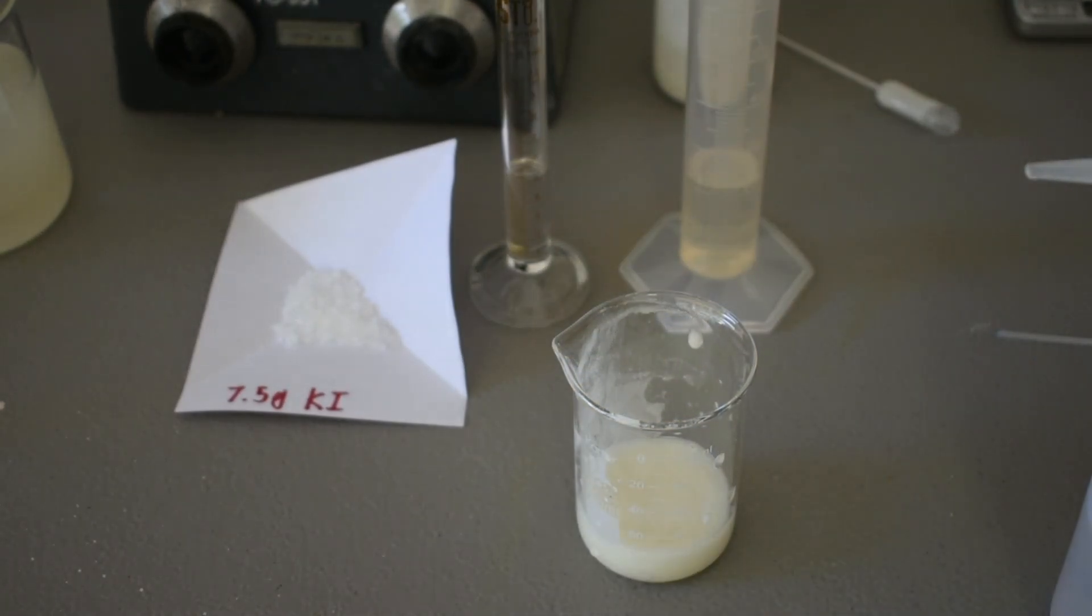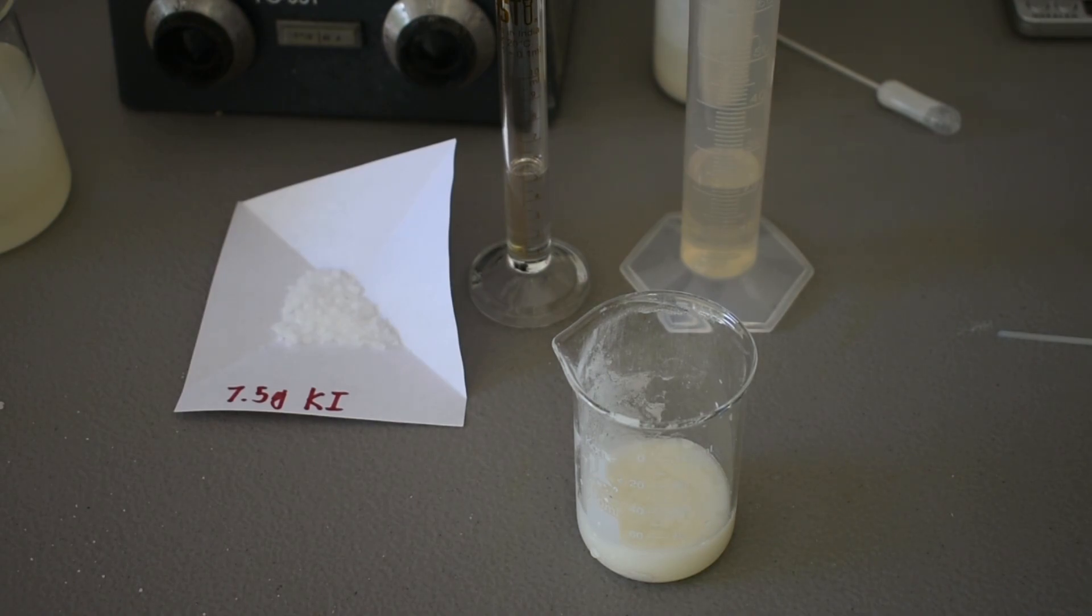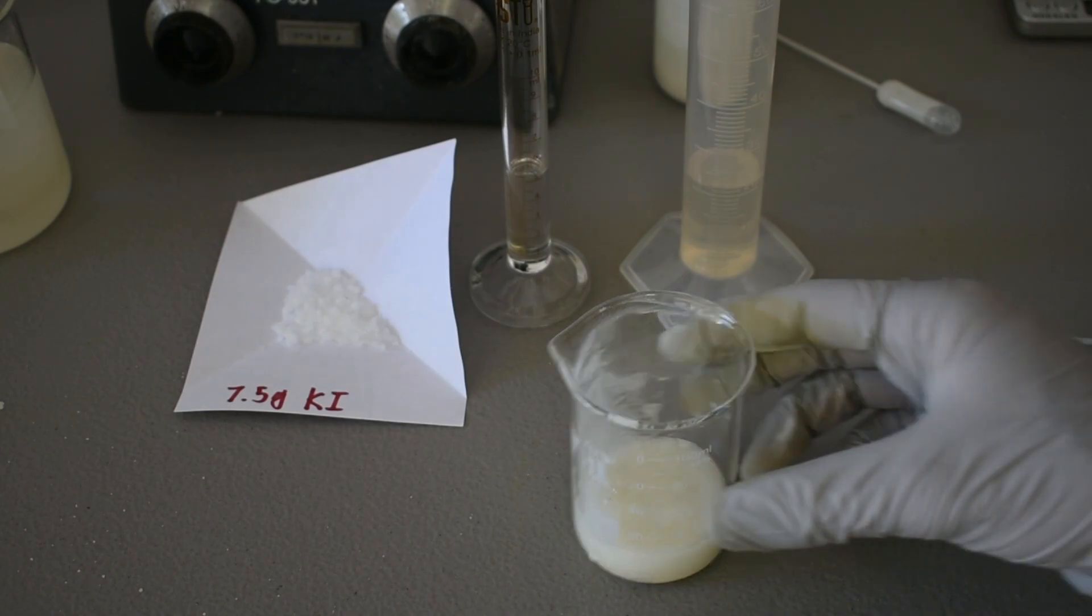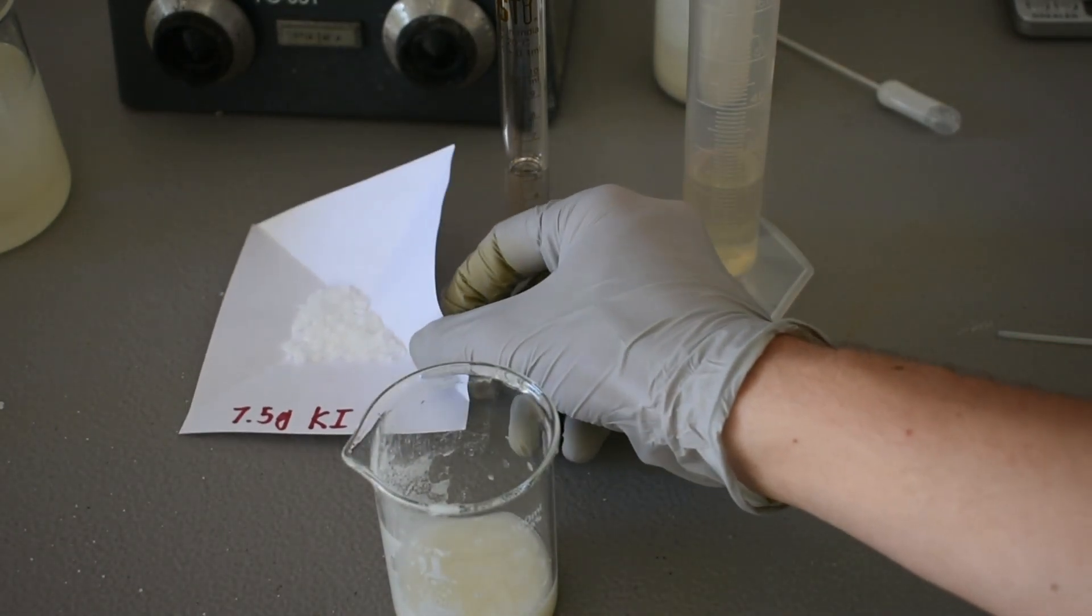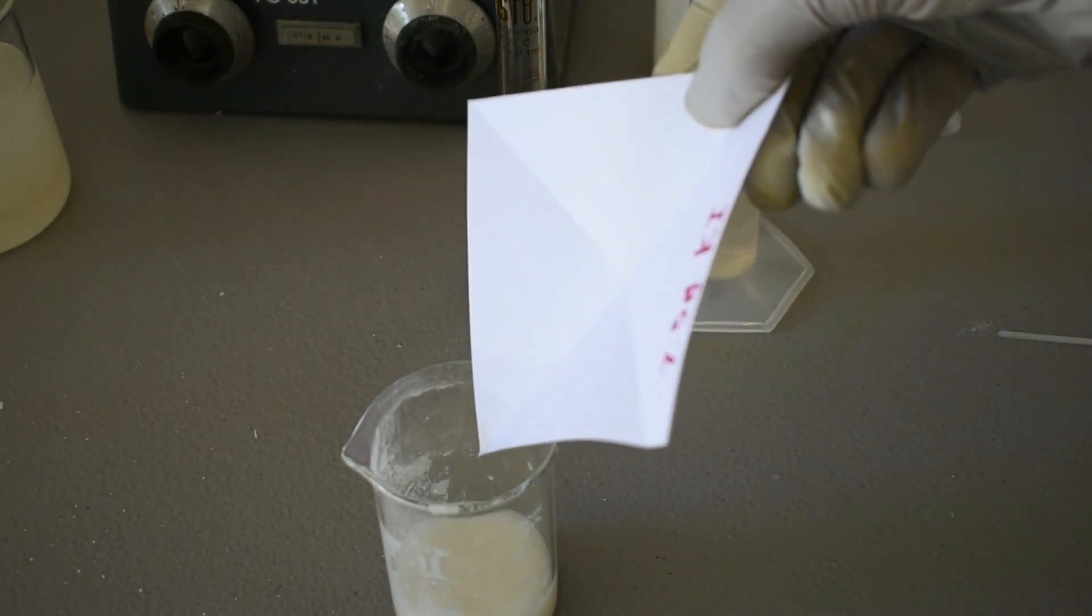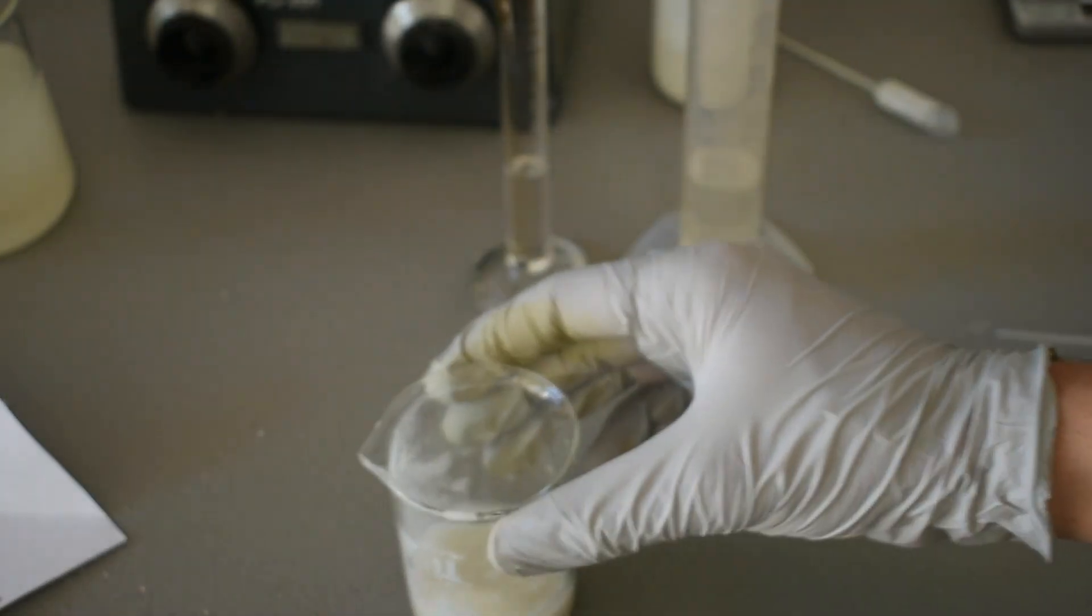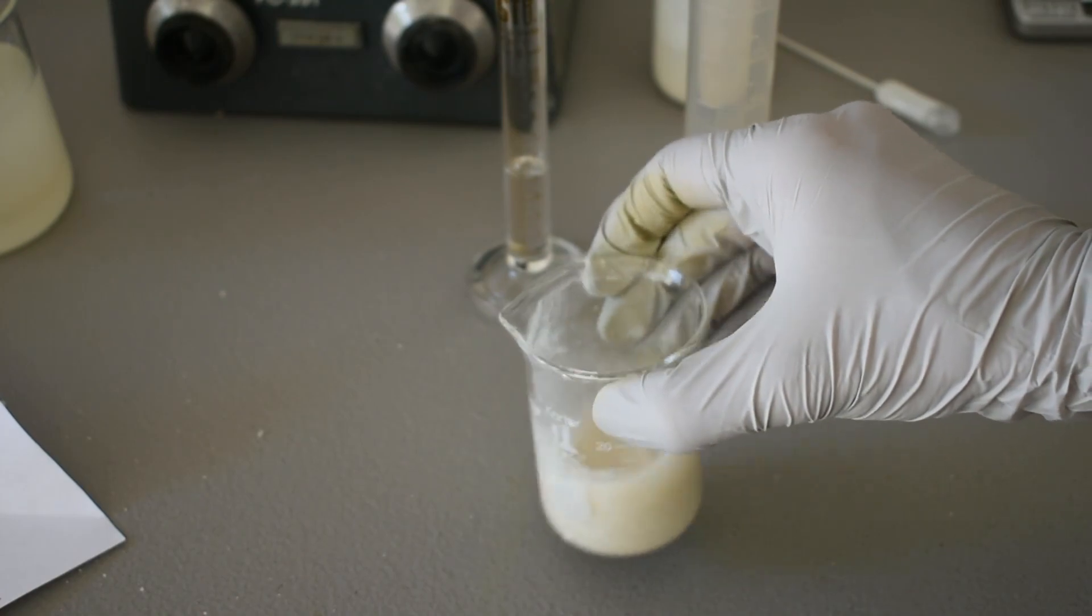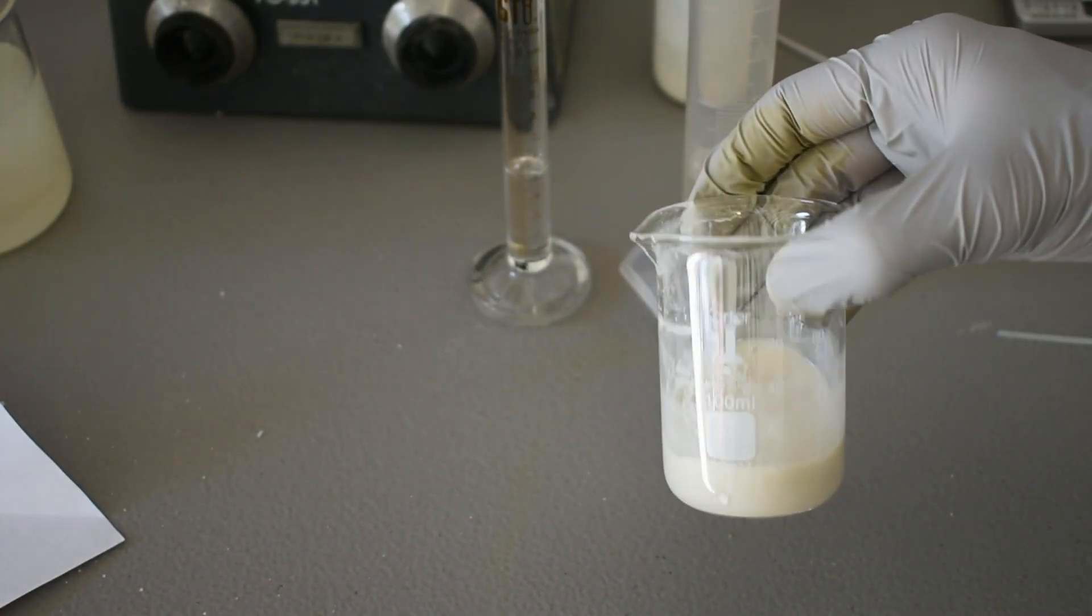Let me get this dirty filter paper out of the way. So now we have another suspension of copper iodide. Five grams of copper iodide in 25 milliliters of water. And what we're going to do is add our potassium iodide to this as well. Here's our seven and a half grams. I'm going to swirl this around so everything's suspended.